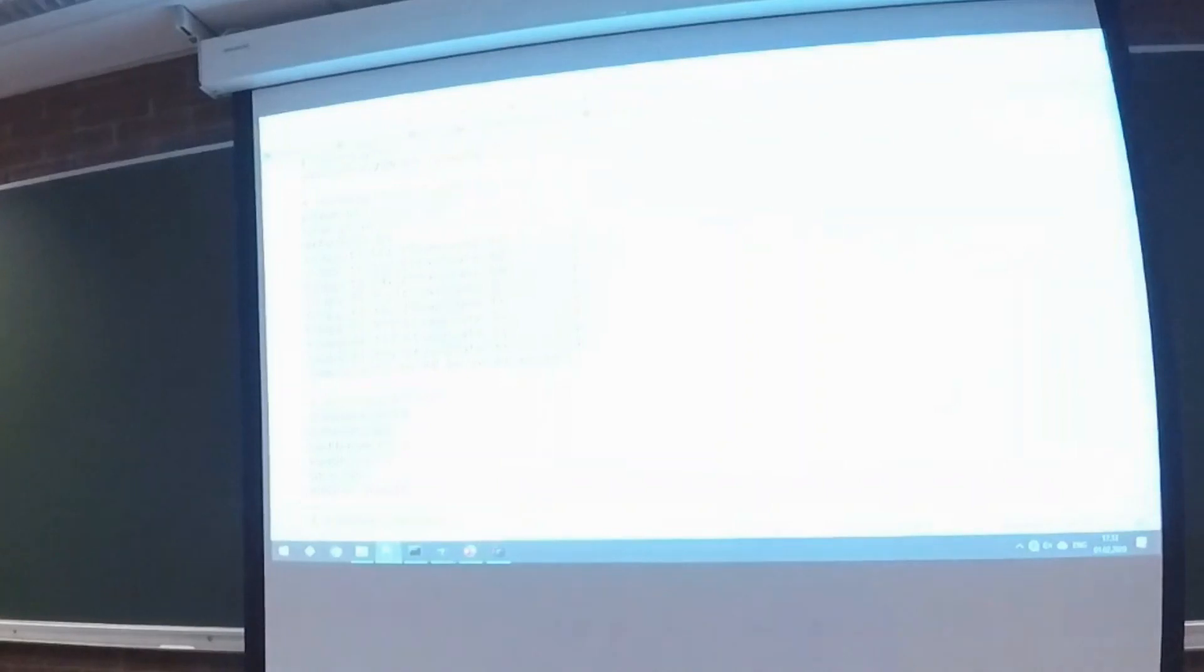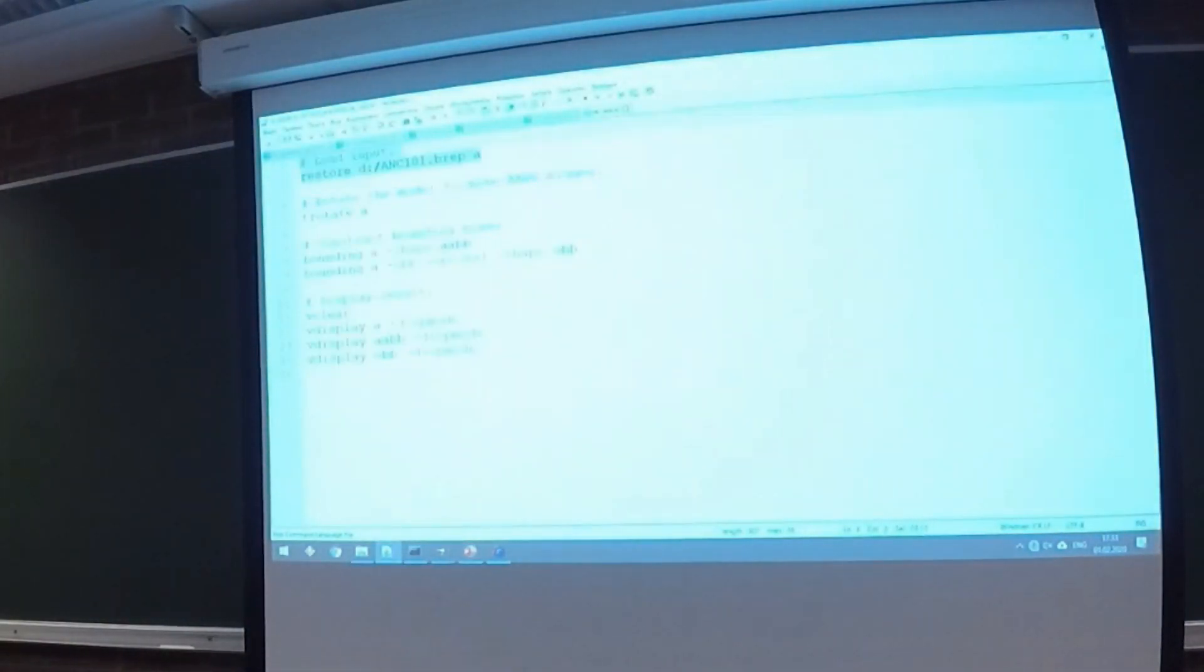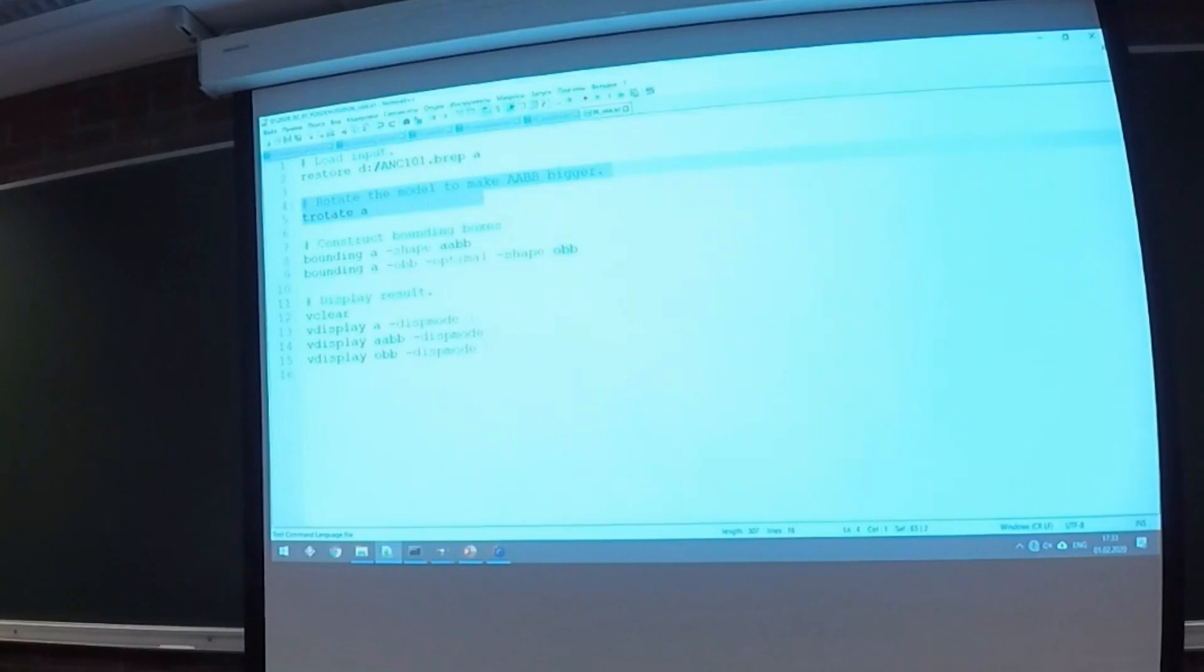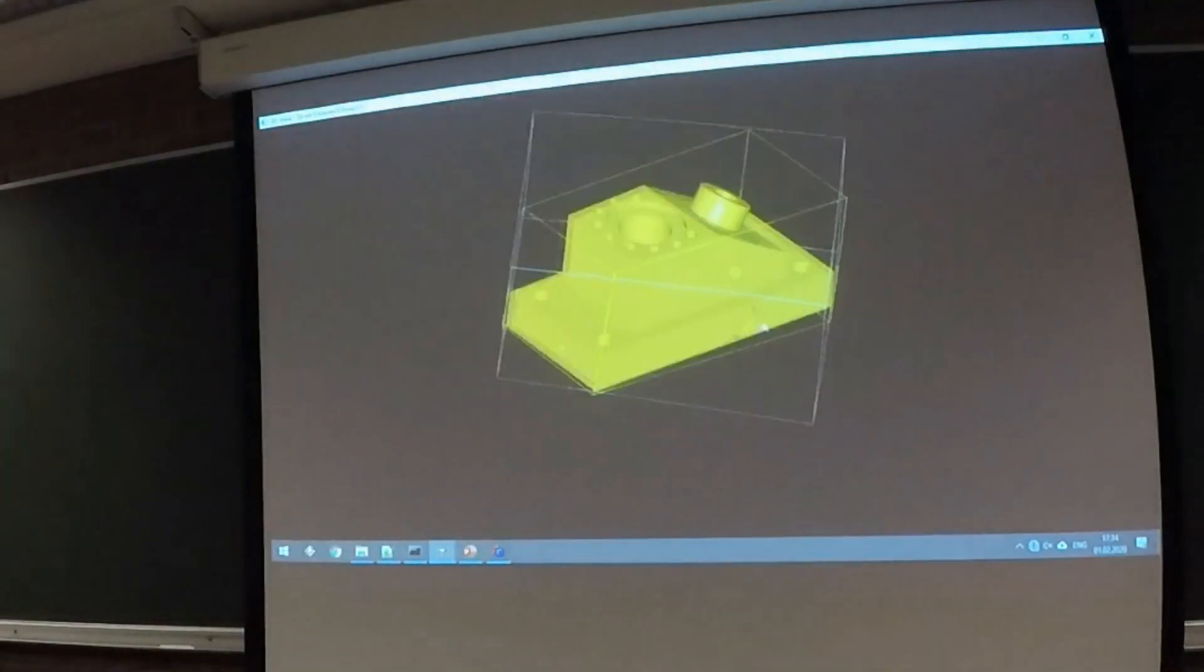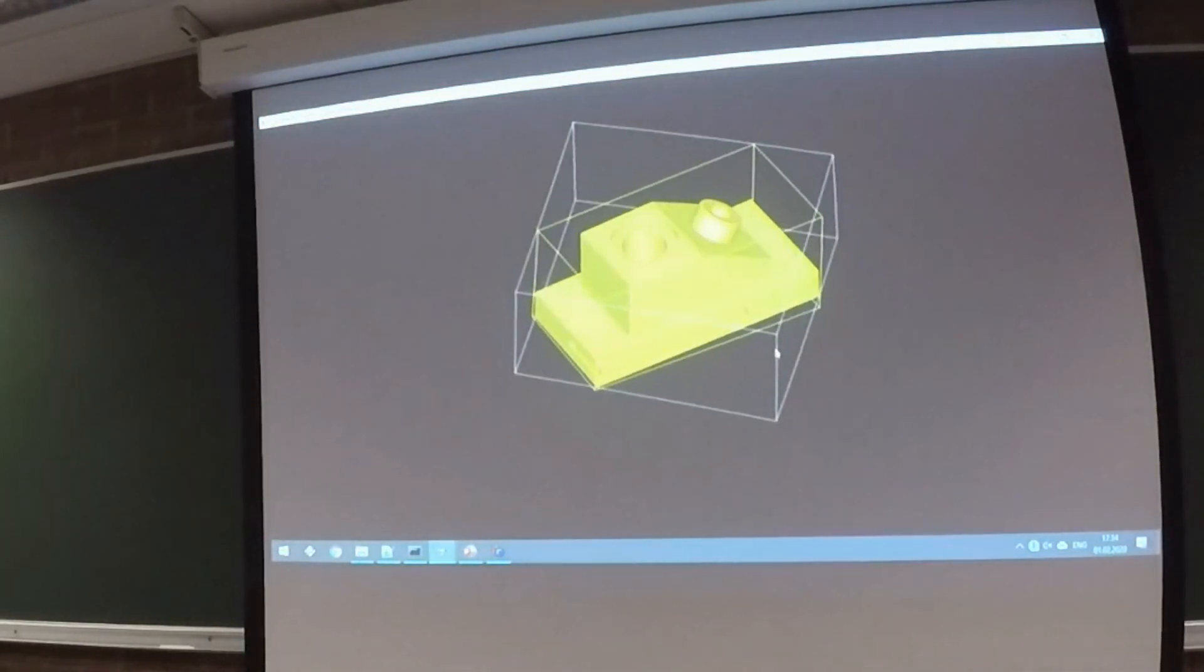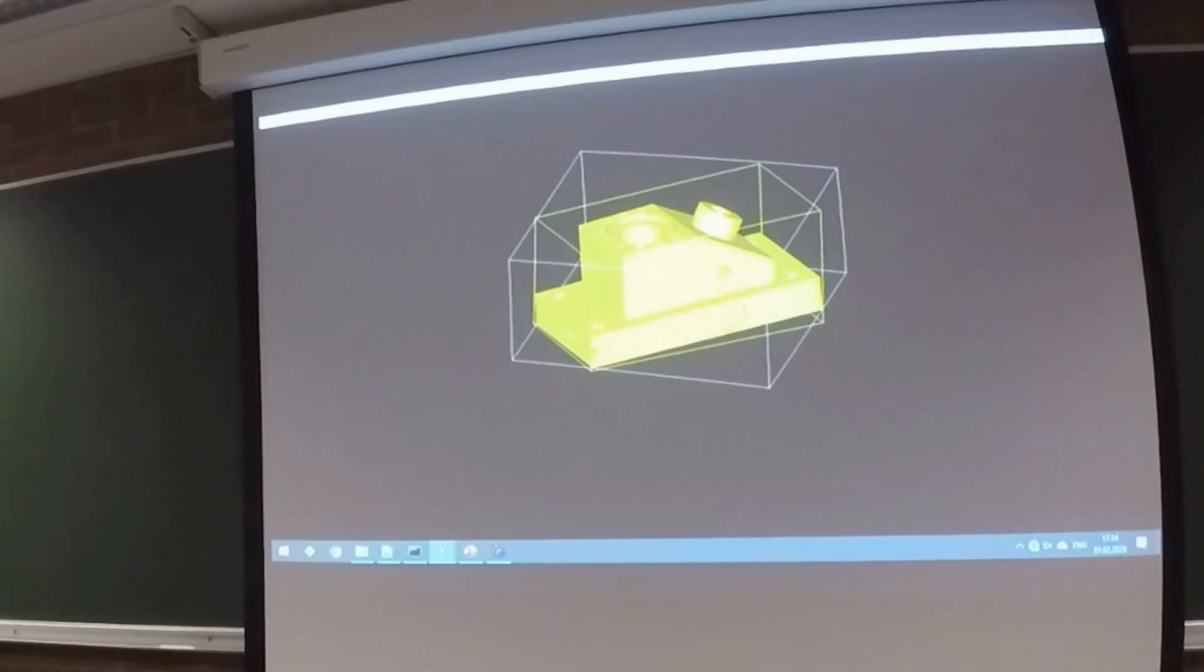A little scene. Here we have a model. It is axis aligned. So, we want to rotate it along that axis to 45 degrees, to make axis aligned bounding box bigger. And after that, we can construct axis aligned bounding box and oriented bounding box. And after that, we can display inputs and outputs. You can see that the bigger one is axis aligned and yellow one is oriented one. It's not absolutely optimal because it uses triangulation to build it. So, it depends on triangulation quality. But it's much better in this case. Nevertheless.